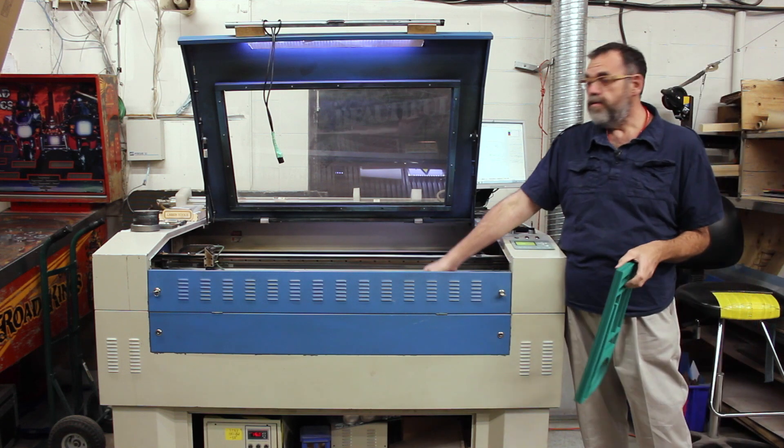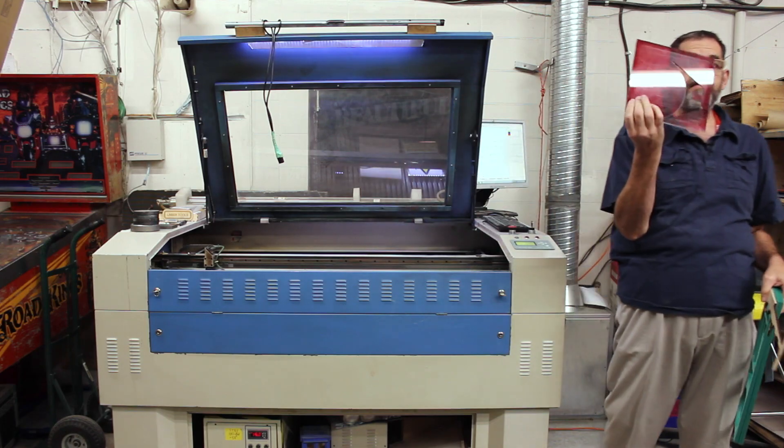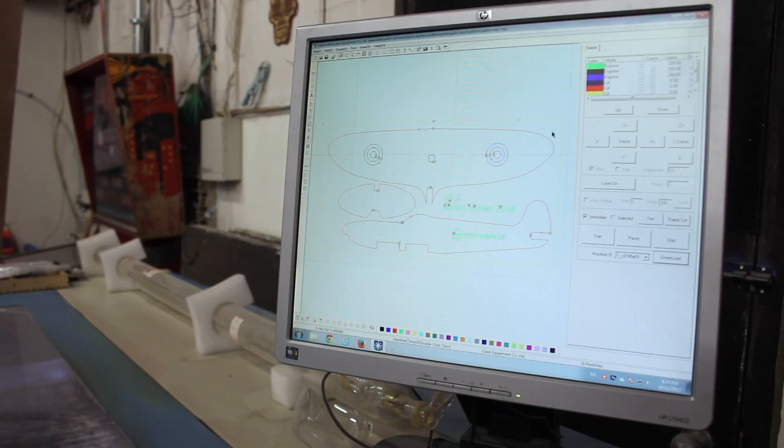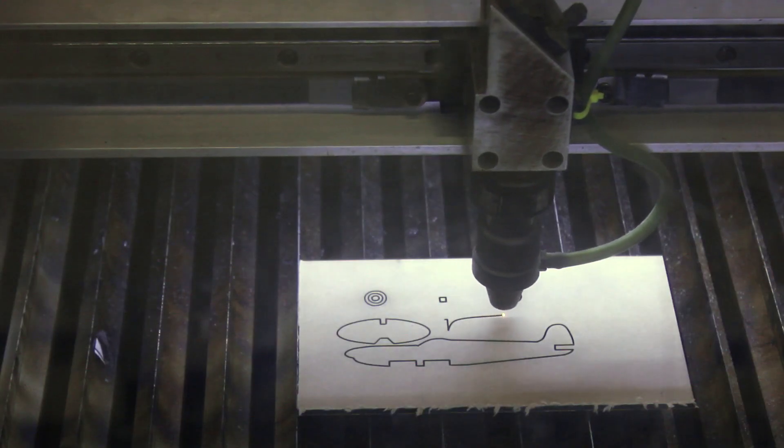You can cut on wood like Baltic birch. You can cut on acrylic in all sorts of colors and shapes and sizes. Anything that you can do as a flat 2D pattern you can cut out of most materials on this laser.